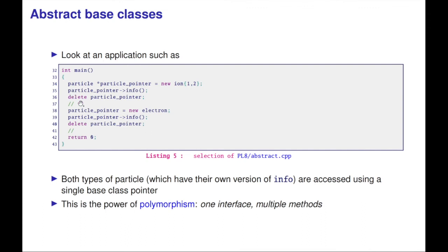If you look at an application like that, you can have a new ion, new electron. You can print the information. Essentially, both types of particle, which have their own function, are accessed using a single base class pointer. That's the power of polymorphism: one interface, multiple methods.